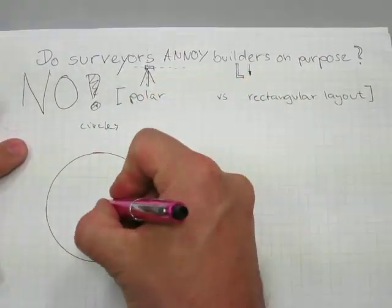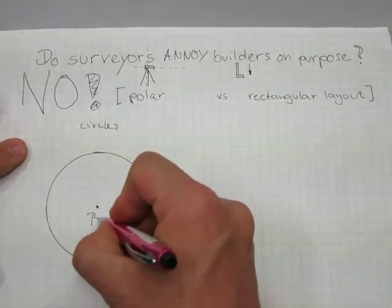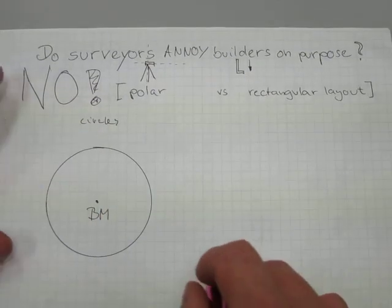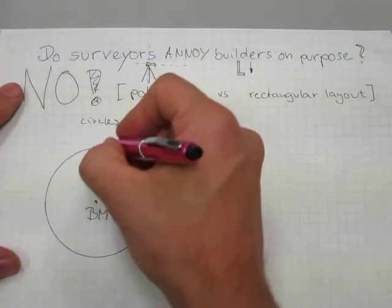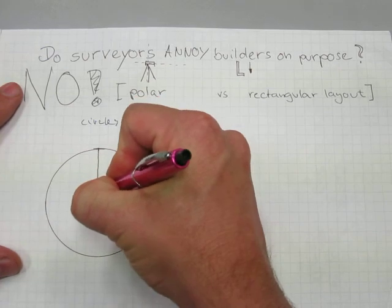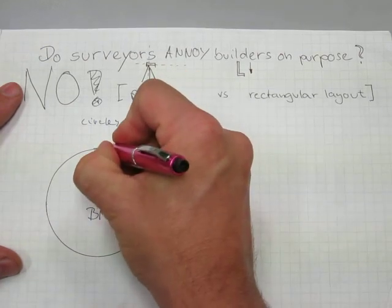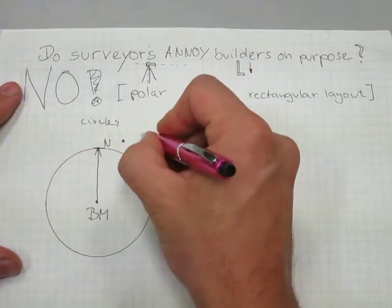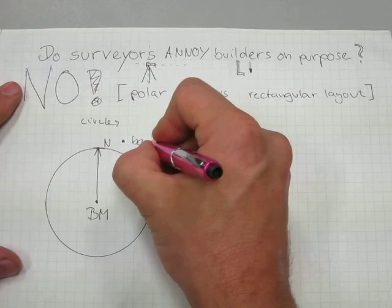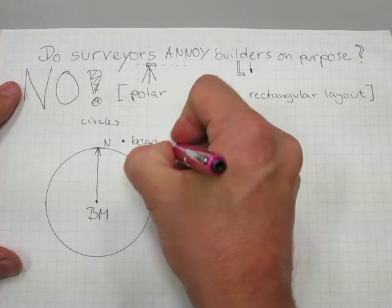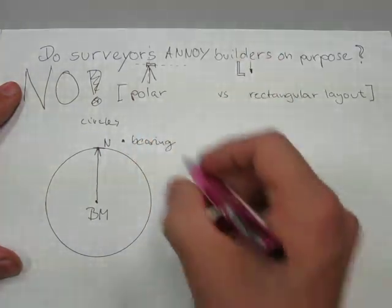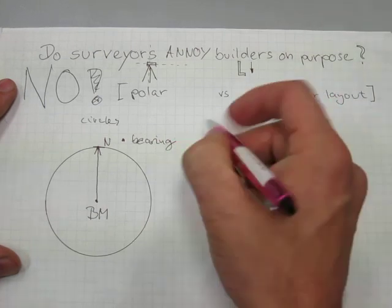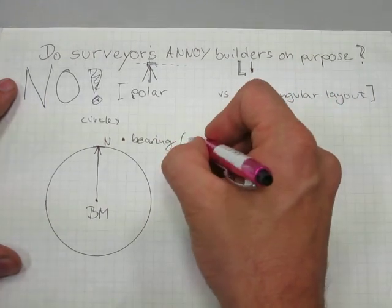For example, they have here a benchmark, typically abbreviated as BM, and from a benchmark they have a bearing — typically referenced from north. That's a bearing as in direction, not a ball bearing.